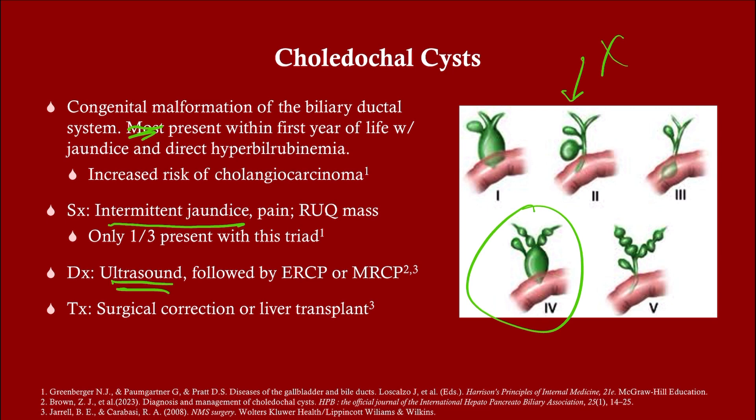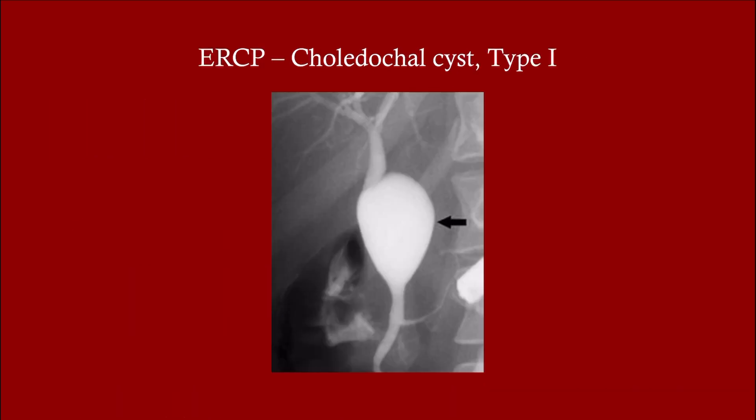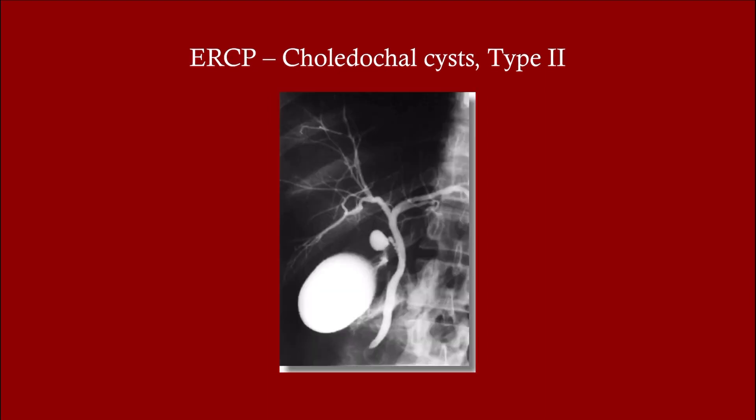Type 4 is circled because this one can be deadly. Here are some pictures — you might get a picture on your exam, and it behooves you to know the anatomy which I already went over.